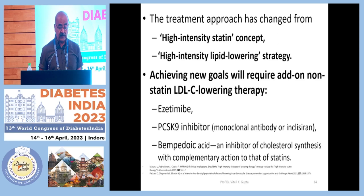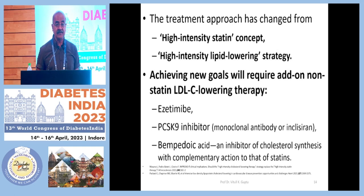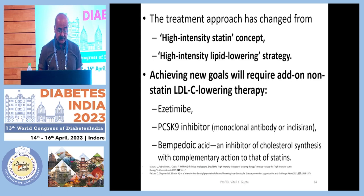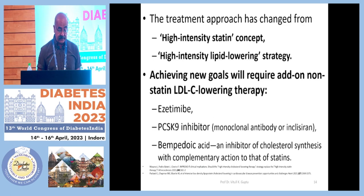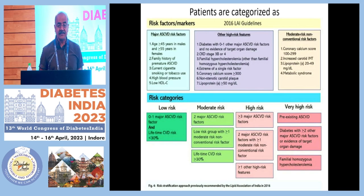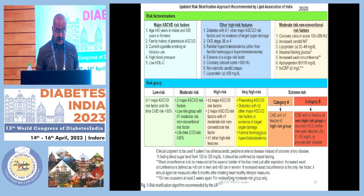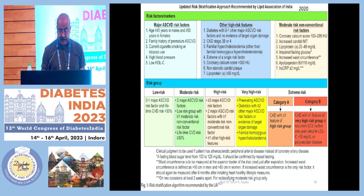The treatment approach has changed over time: from a high-intensity statin concept to a high-intensity lipid-lowering strategy. We are now focusing on lipid-lowering by adding ezetimibe, bempedoic acid, and PCSK-9 inhibitors rather than simply intensifying statin dose. These are the potential new risk categories — high-risk category A and category B — which determine our drug treatment stratification.